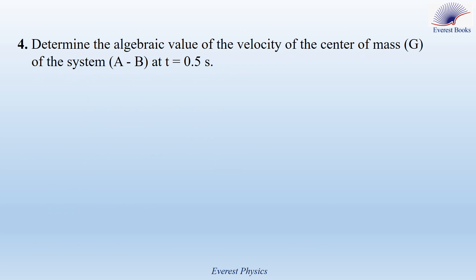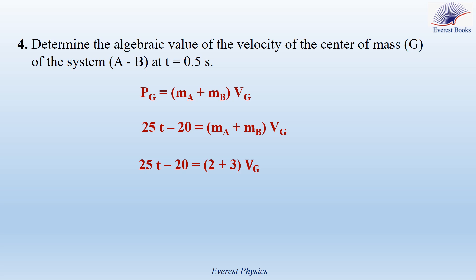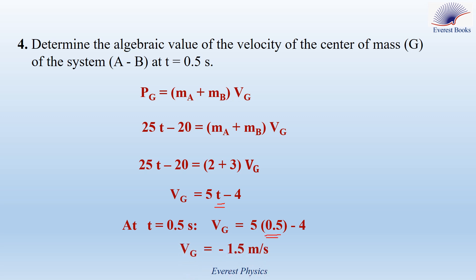Part 4: Determine the algebraic value of the velocity of the center of mass G of system AB at t equals 0.5 seconds. Using PG equals (MA plus MB) times VG, and PG equals 25t minus 20, substituting MA and MB gives VG equals 5t minus 4. At t equals 0.5 seconds, VG equals minus 1.5 m/s.